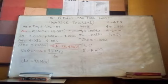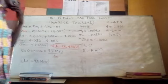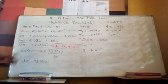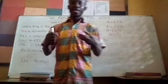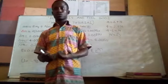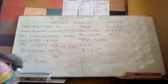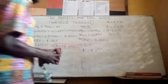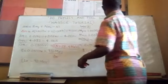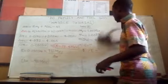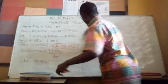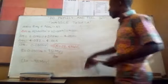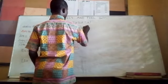Now we are asked to find the binding energy per nucleon (beta). The binding energy per nucleon equals the total binding energy divided by the number of nucleons.